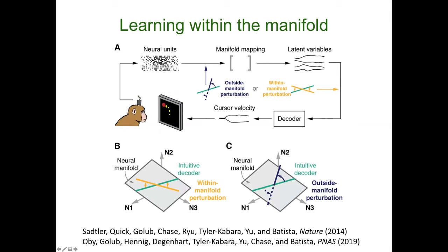For monkey C — our longest-recorded animal — we have shown this over a span of nearly two years, which has never been done before. In closing: we were able to do all of this with linear methods. The philosophy in our group is to first apply the full battery of linear methods and extract as much as we can; where they fail will guide us on which nonlinear methods to adopt. But first, let's learn everything we can from linear dimensionality reduction. Thank you.